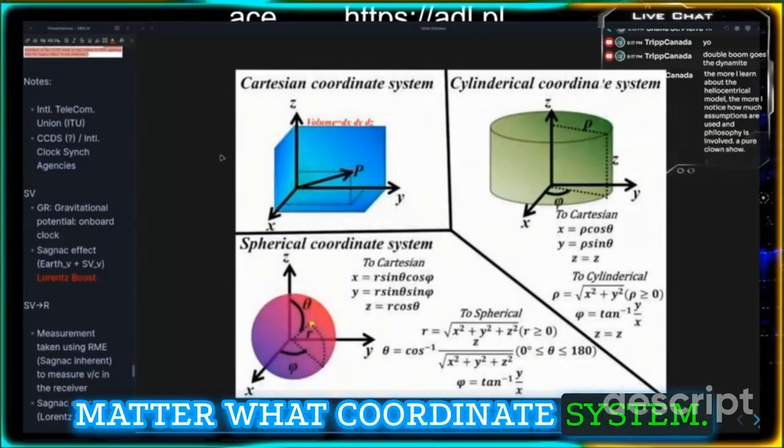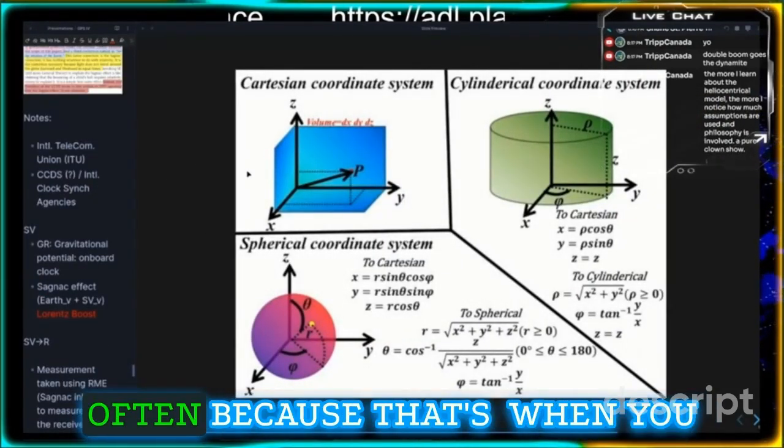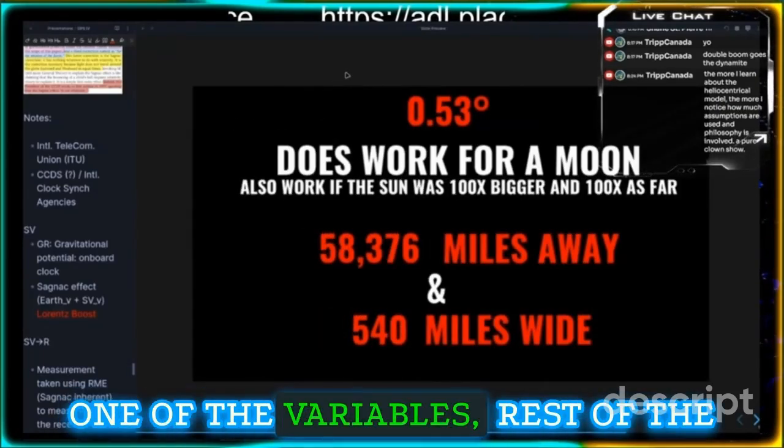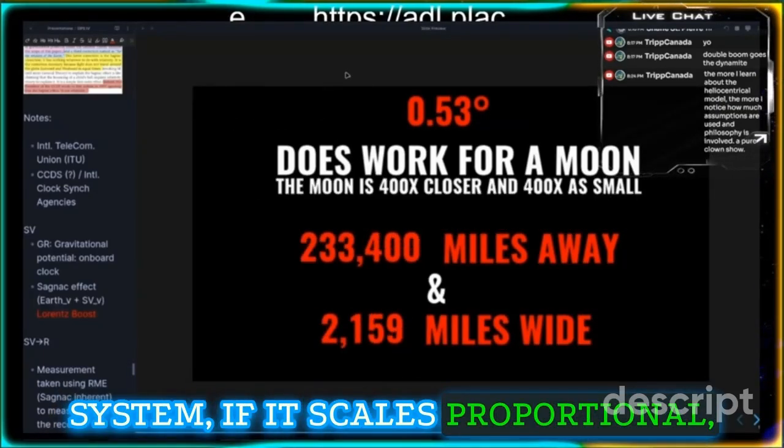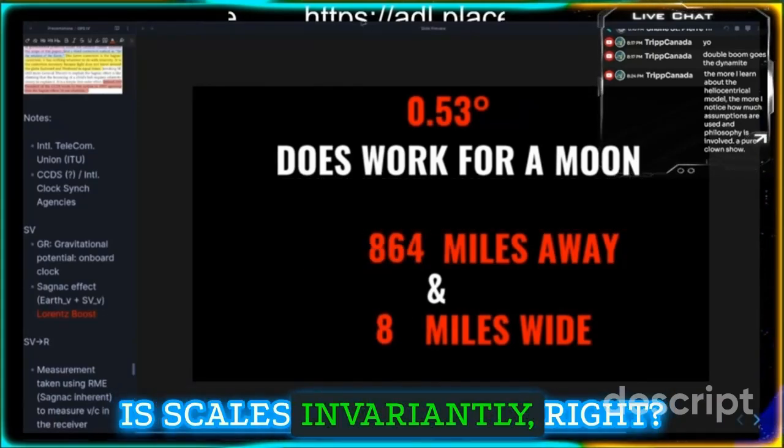It doesn't matter what coordinate system. We're going to get into scale invariance a little bit. That's when you change a constant in a system, one of the variables. If the rest of the system scales proportional, that means the system is scale invariant.